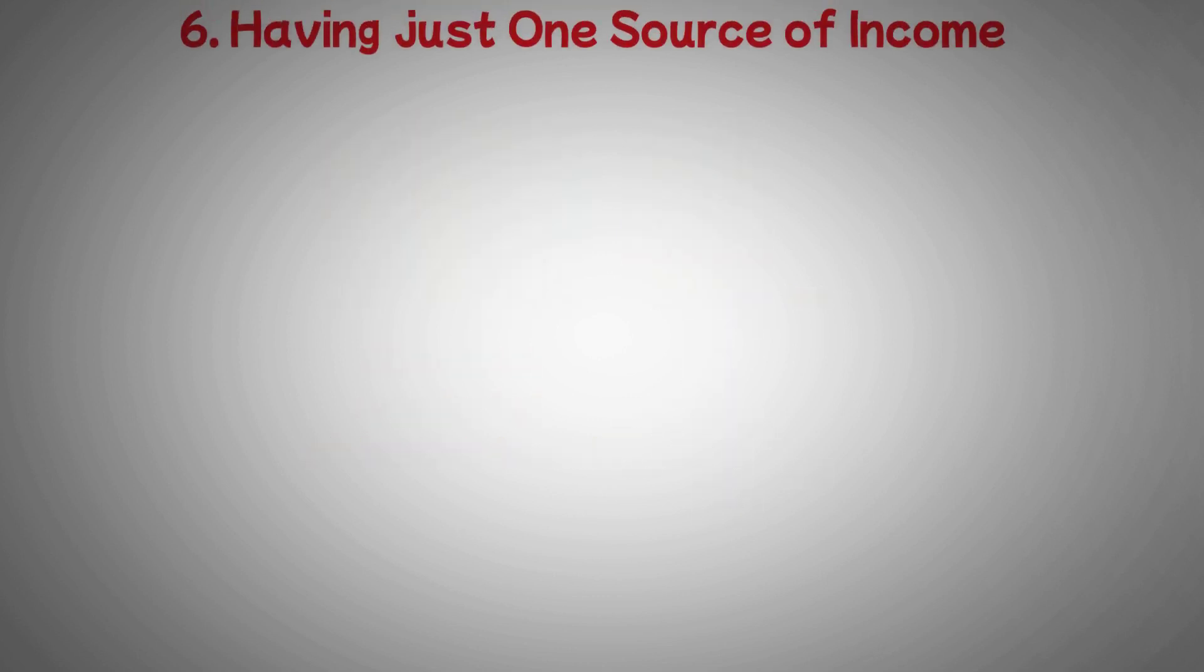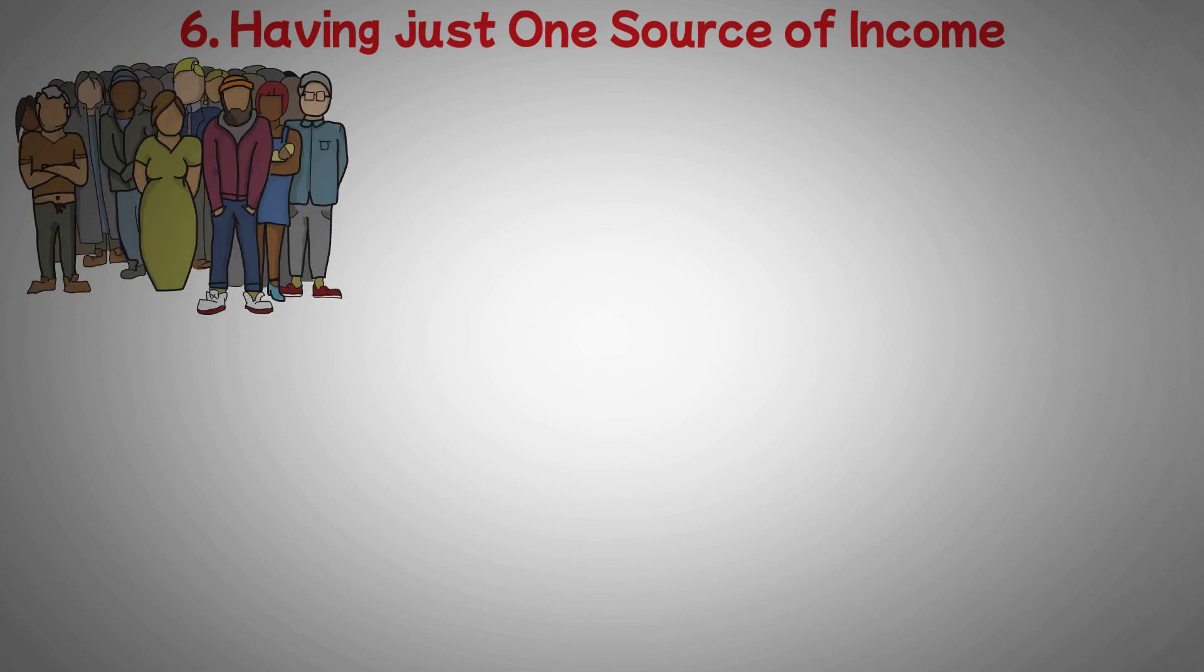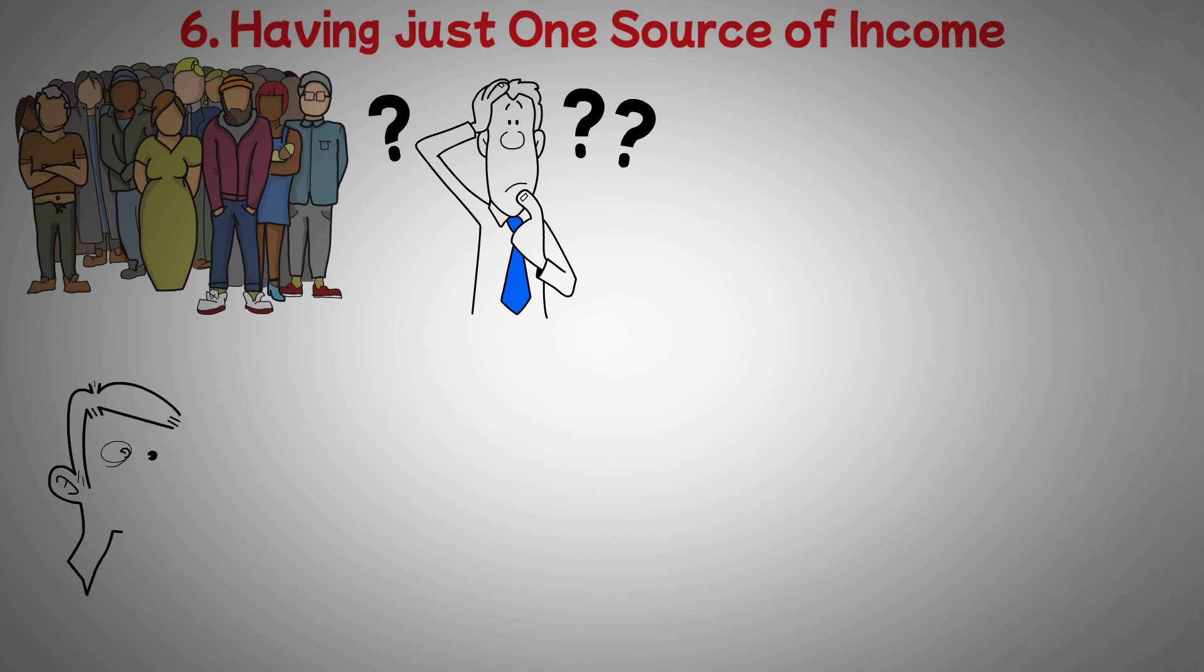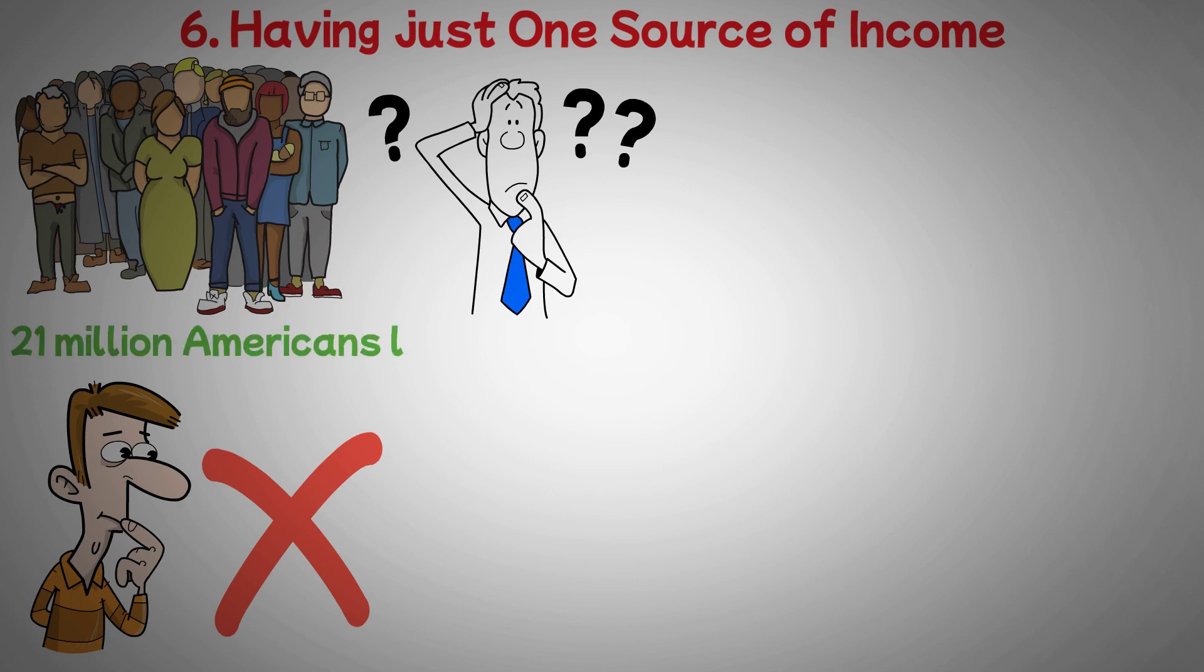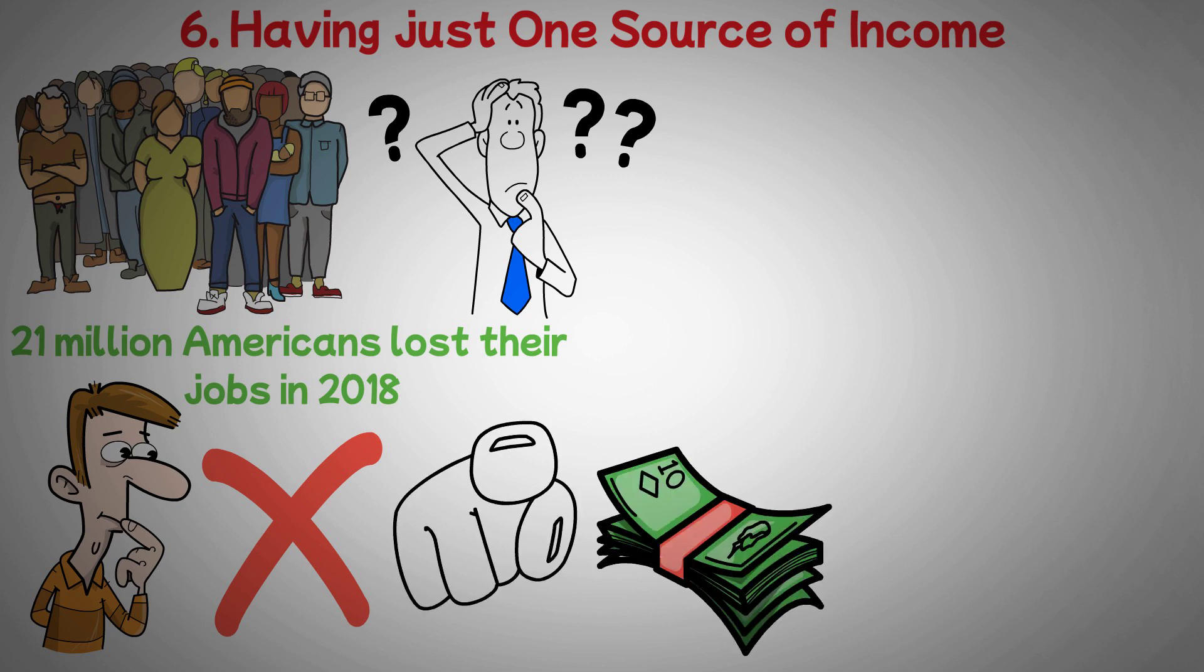Six: having just one source of income. The majority of people live their lives with one source of income, and a salary is often how this cash is received. Unfortunately, despite what many might think, jobs are not always secure. In reality, more than 21 million Americans lost their jobs in 2018, which meant that if your employment was your only source of income, your income abruptly stopped.